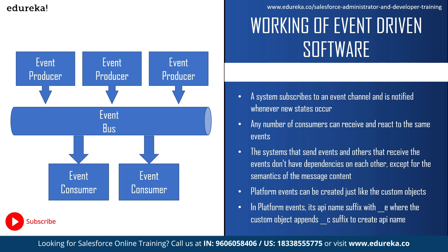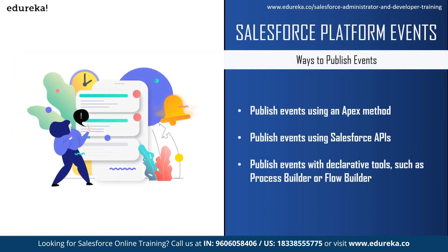Platform events can be created just like custom objects. The prominent difference between platform events and custom objects is the suffix added to the API name — platform events use the suffix underscore underscore E, whereas custom objects use underscore underscore C. Another major difference is that unlike custom objects, you cannot update or delete event records or view them in the Salesforce user interface. You can publish events using Apex or Salesforce platform APIs such as SOAP API, REST API, or Bulk API. Declarative tools such as Lightning Process Builder or Cloud Flow Designer can also be used to publish platform events.